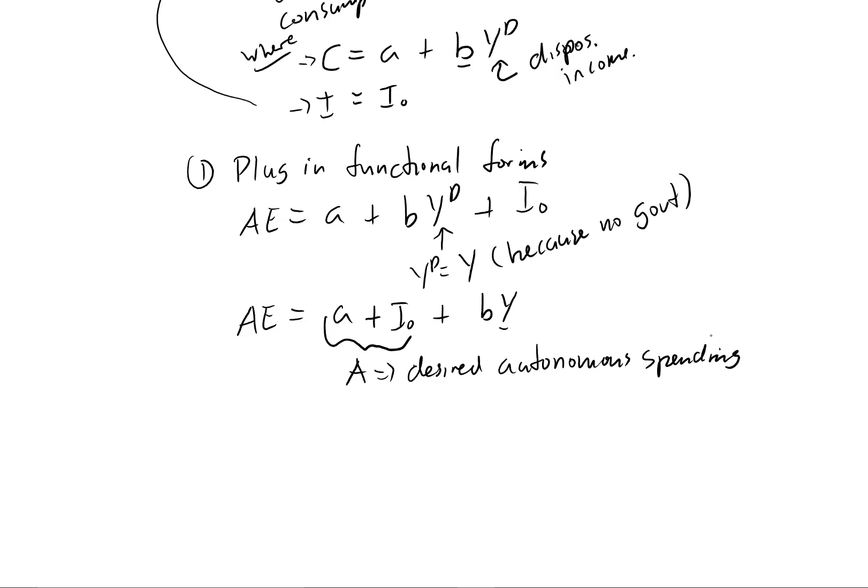And so when we say autonomous, all it's saying is it doesn't rely on the income, like this term here relies on income, since it's multiplied by Y. This A and this I zero are not multiplied by Y. So no matter what the level of national income, that's going to be a level of desired aggregate expenditure.